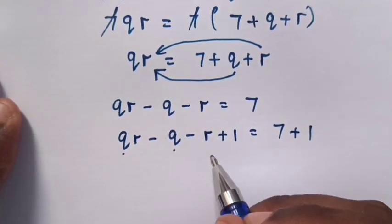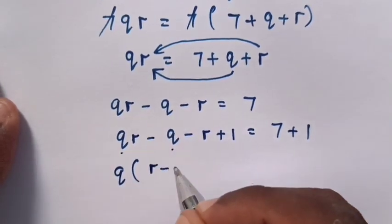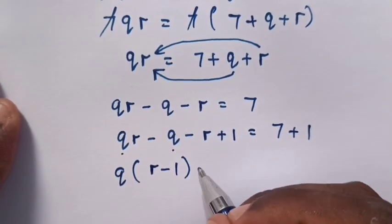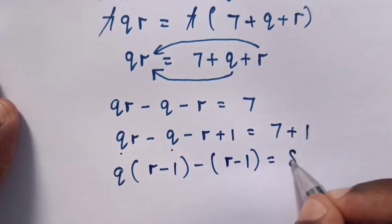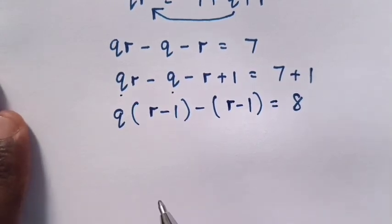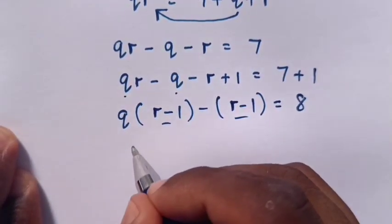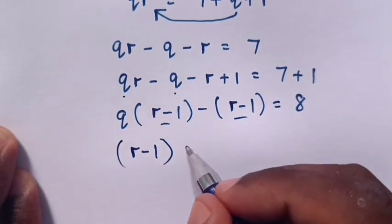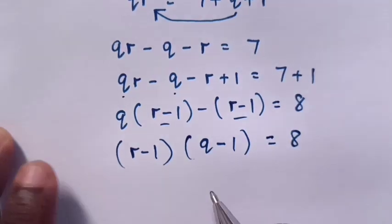Then here Q is common, so we take Q out of bracket R minus 1. And here we take negative 1 out of bracket R minus 1 equals 8. Then R minus 1 is common, so R minus 1 bracket times Q minus 1 equals 8.